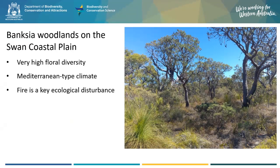So much of our fire ecology research here at Kings Park is focused on the Banksia woodlands on the Swan Coastal Plain. These woodlands are amazing to work in — they've got very high floral diversity, meaning we're always seeing something new each time we go into the bushland. A key feature of these Banksia woodlands is that they experience the Mediterranean-type climate, just like the rest of the southwest of Western Australia. These climates are characterised by cool wet winters and hot dry summers, and because they experience this seasonal drought in summer, they are highly fire prone and fire is a key ecological disturbance.